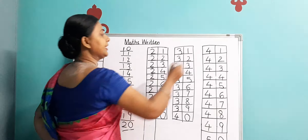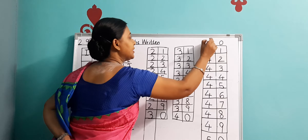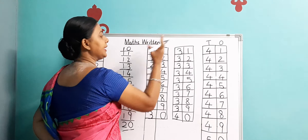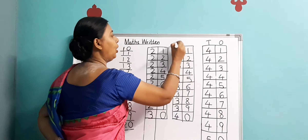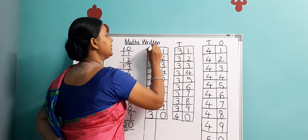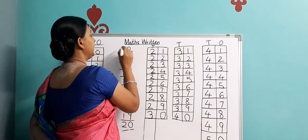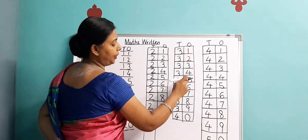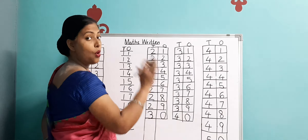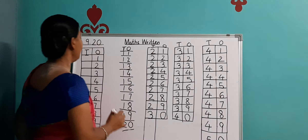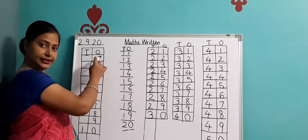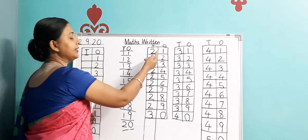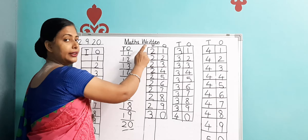So did you understand? This is the 1's column and this is the 10's column. Always 10, 20, 30, 40 will always come under T — under the 10's column. And 1, 2, 3, 4, 5, 6 will always come under the 1's column — because these are single digit numbers. When it becomes a 2-digit number, then the second number will come under the 10's column.